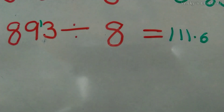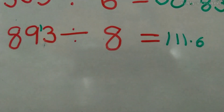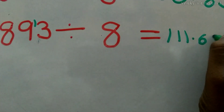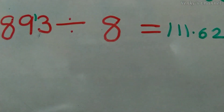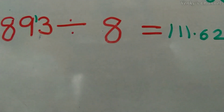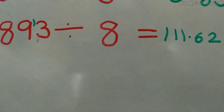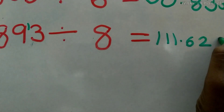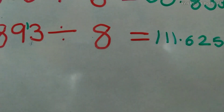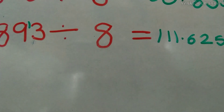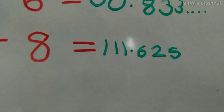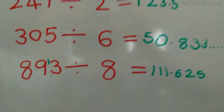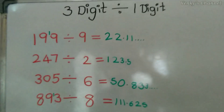We have a remainder of 2. Putting a 0 beside 2 makes it 20. 8 × 2 = 16, remainder 4. Putting a 0 beside 4 makes it 40. 8 × 5 = 40, no remainder. So our answer is 111.625.